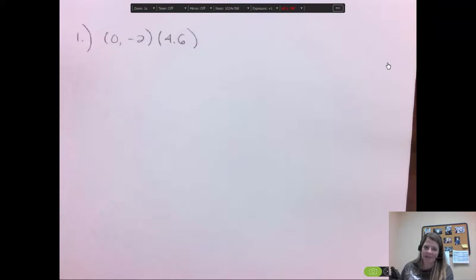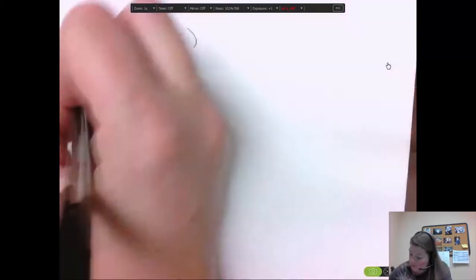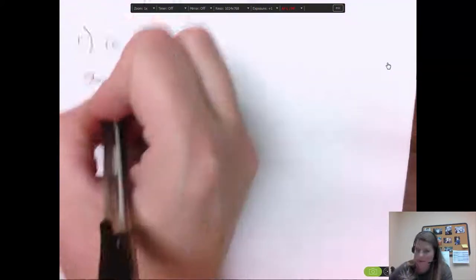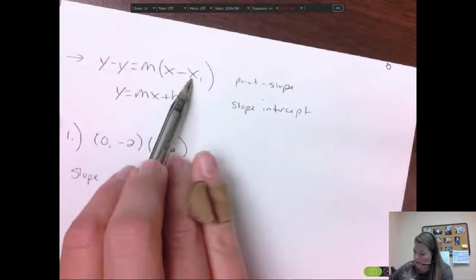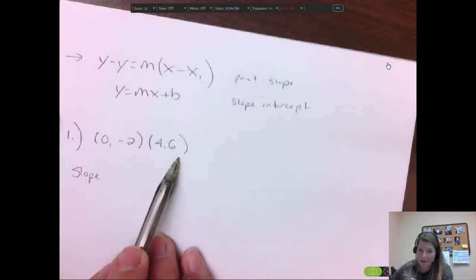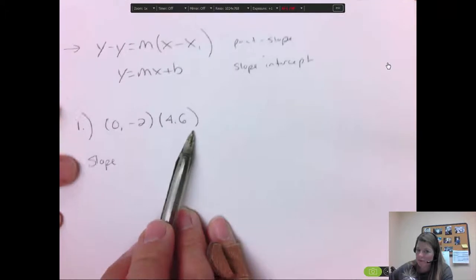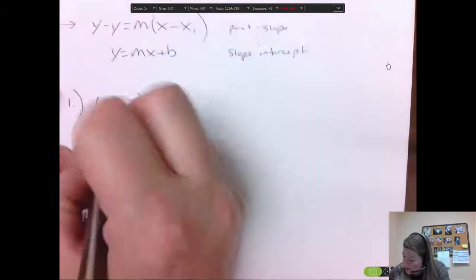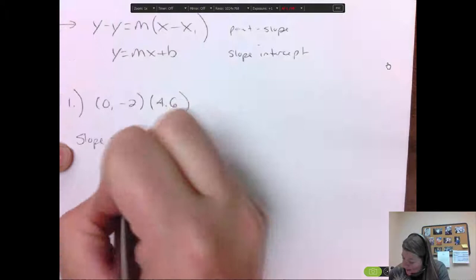This is as hard as it gets, is if you're given two points. You have to start with finding the slope so that in point slope you can put in the slope and a point. Well, you already have two points that are on that line. So you can use one of those two points, but you have to find the slope. So the slope is y minus y over x minus x.